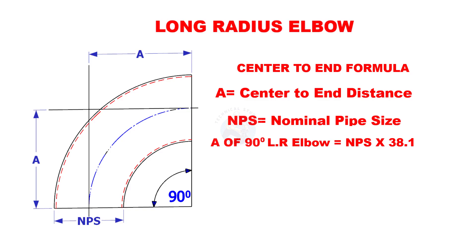A of a 90 degree long radius elbow is nominal pipe size multiplied by 38.1. Here 38.1 is a constant.